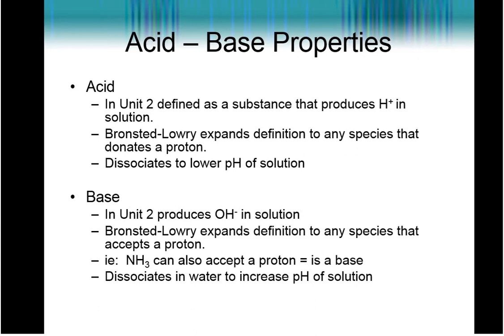So in unit two, we defined acid as any substance that produces H+ in solution. We're going to expand that or clarify it a little bit using the Bronsted-Lowry definition, which is a little bit better. This says that an acid is any species that donates a proton to solution. If you think about hydrogen, hydrogen has an atomic number one, mass number one, and it has one proton, one electron when it's neutral. If you have a positive charge, you then lose that electron. So you have one proton, no neutrons, it's just a proton. Now we still write it as H+, but it's a better definition overall. Now when an acid dissociates in solution, it's going to lower the pH.